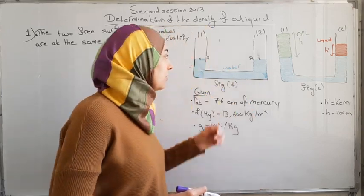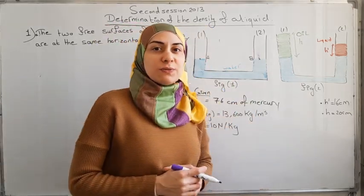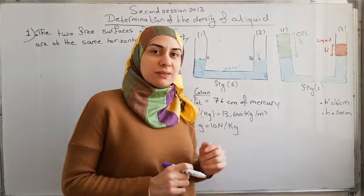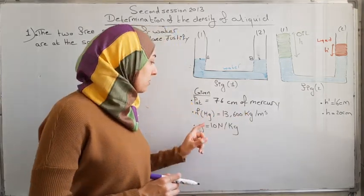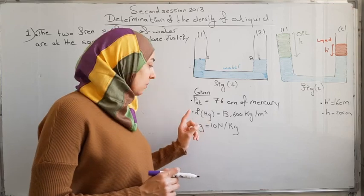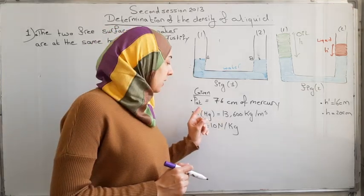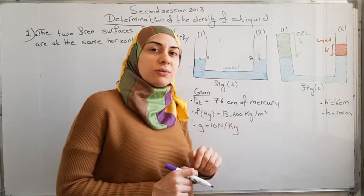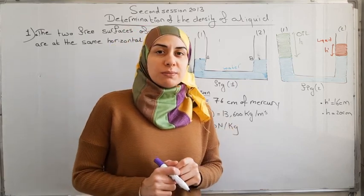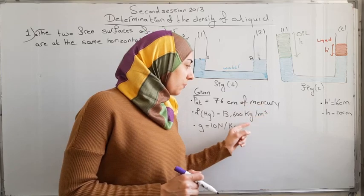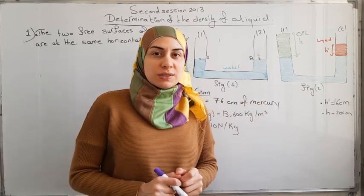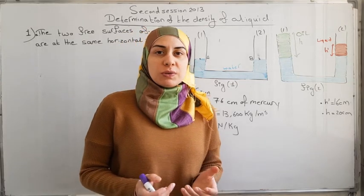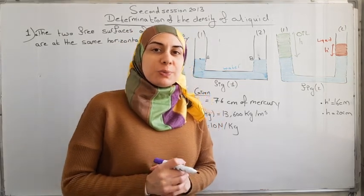For this, we consider a U-shaped tube that is filled with a certain amount of water. You are given that P atmospheric equals 76 centimeters of mercury. You are also given that rho hg, which is the density of mercury (hg is the symbol of mercury), equals 13,600 kilograms per cubic meter, which is the SI unit of density. Finally, you are given that the gravitational field strength, or simply g, equals 10 newtons per kilogram.